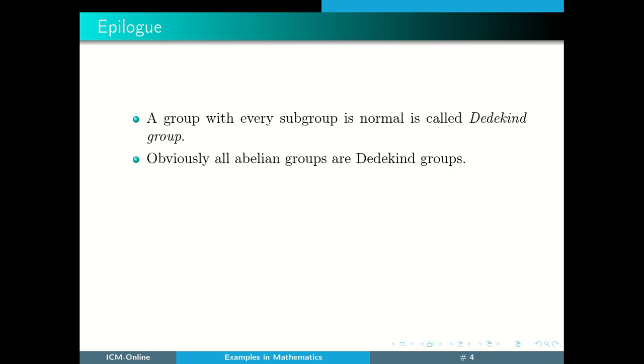Obviously all abelian groups are Dedekind groups. A non-abelian Dedekind group is called a Hamiltonian group, named after Hamilton who introduced quaternions.